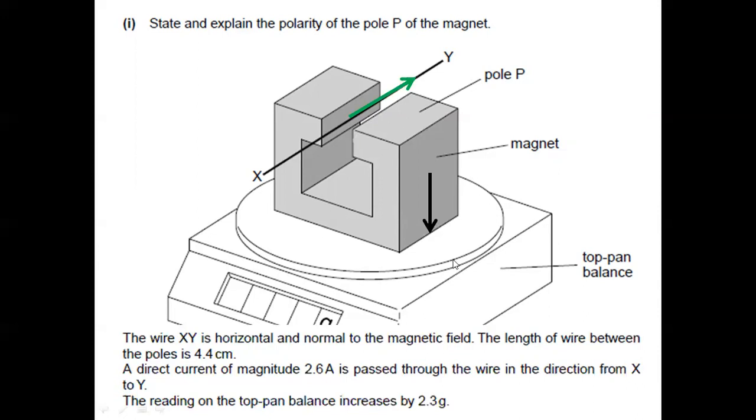So why is it that the magnet moved down? Actually, this is governed by Newton's third law, the law of interaction, which means if the magnet experienced a force of a certain magnitude and the force is directed down,